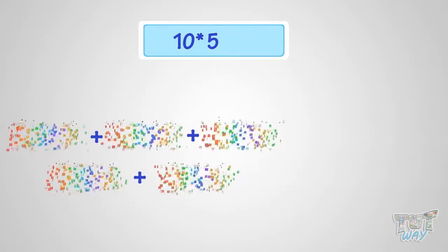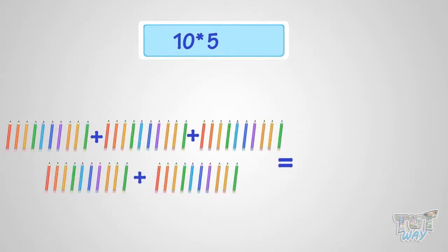What is 10 multiplied with 5? It is same as five sets of 10 pencils. So, it is 50 pencils. That is, 10 multiplied by 5 is 50.